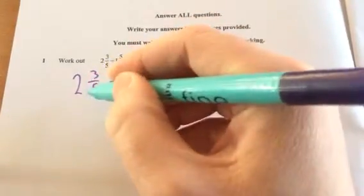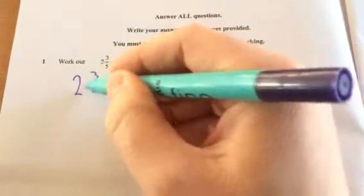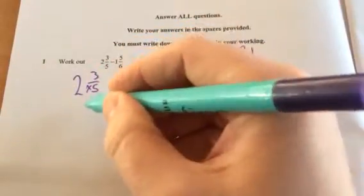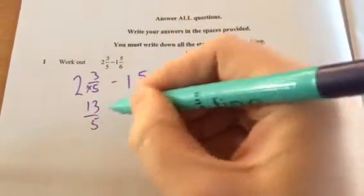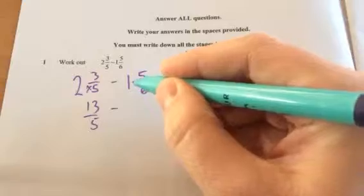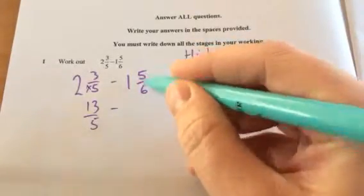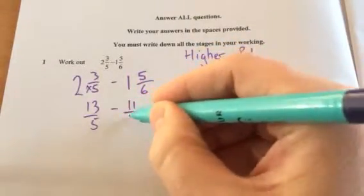We know there's 5 fifths in 1, so there's 10 fifths in 2. Multiplying that by 5 and adding, we've got 13 fifths. We know we've got 6 sixths in that, and we need to add that, so 11 over 6.